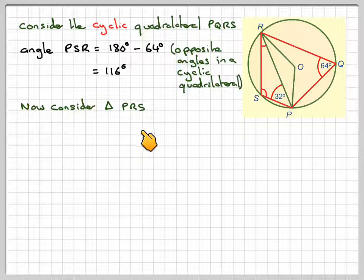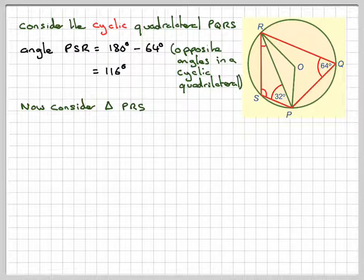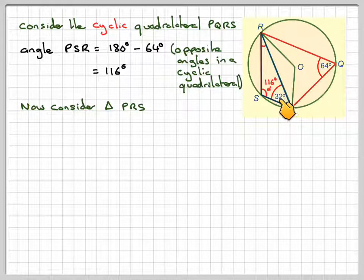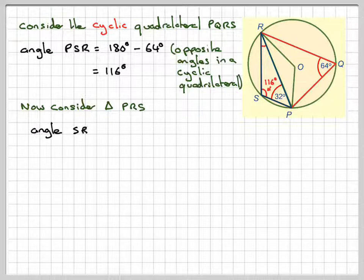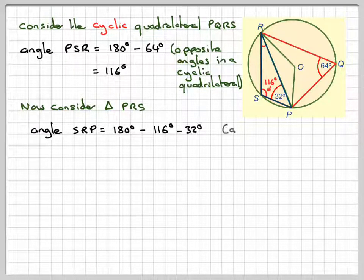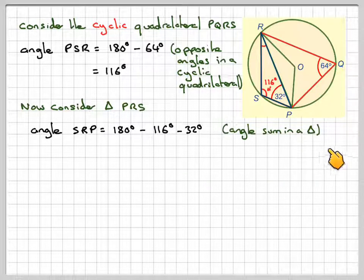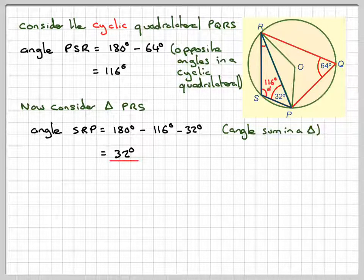Now, consider triangle PRS. We're going to put that in blue. We know this is 116, so we can find that missing angle. Angle SRP is 180 minus 116 minus 32, angle sum in a triangle, which gives 32.